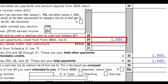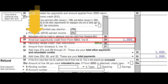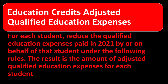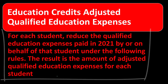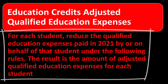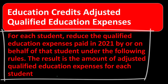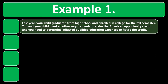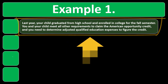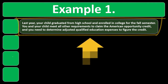The refundable section is at the bottom of Form 1040 page 2, at line 29 for the American Opportunity Credit from Form 8863. For Education Credits, you must reduce Qualified Education Expenses paid in 2021 by or on behalf of each student under the following rules to get the Adjusted Qualified Education Expenses. Example one: last year your child graduated high school and enrolled in college for the fall semester, meeting all requirements to claim the American Opportunity Credit.